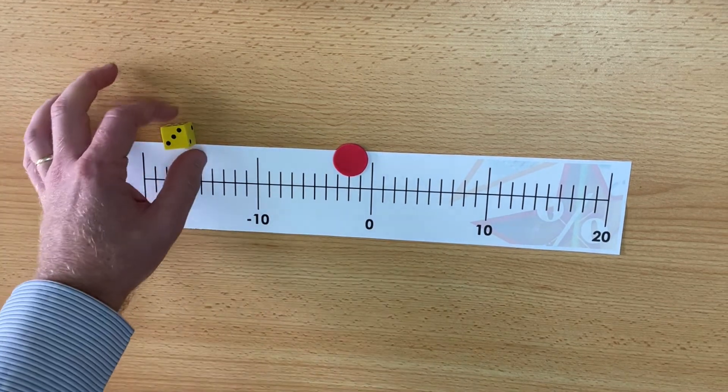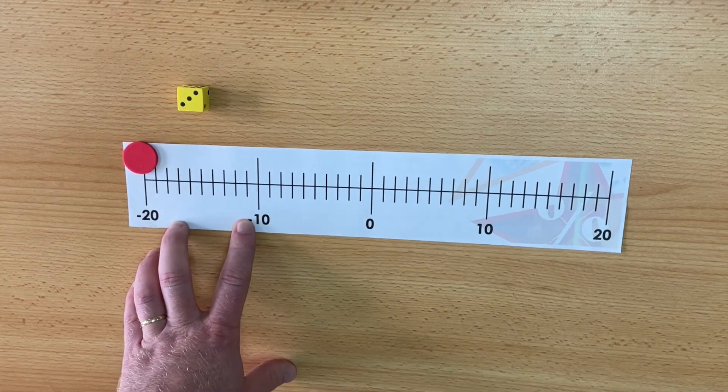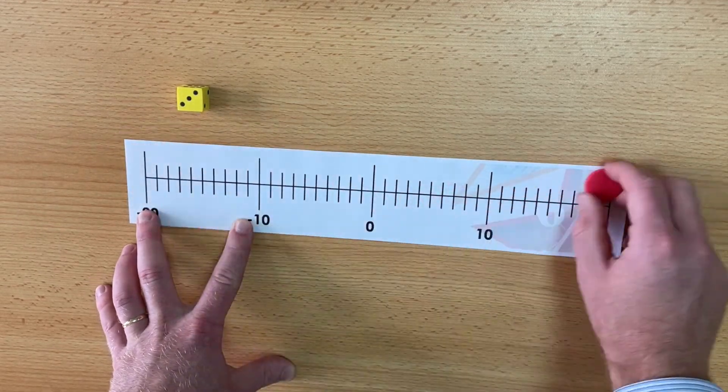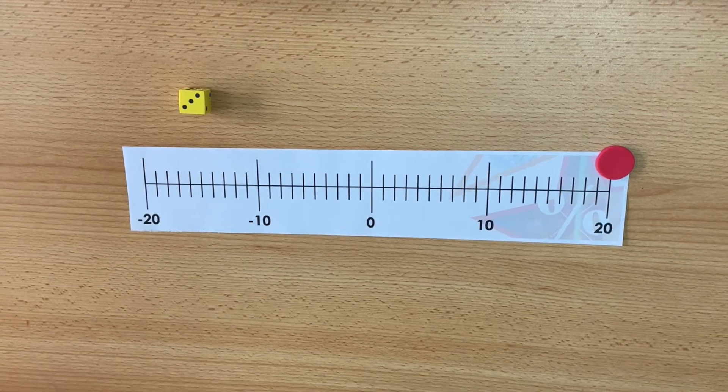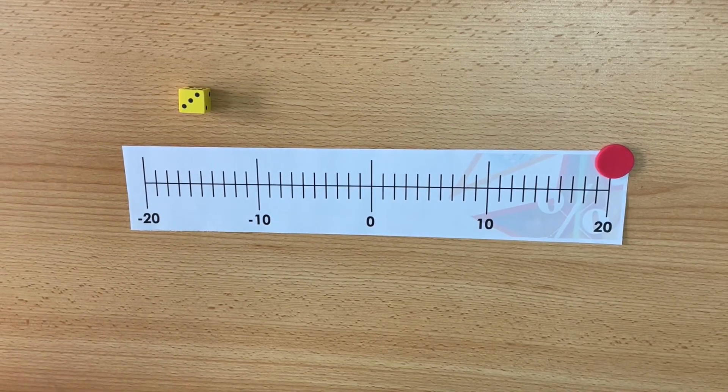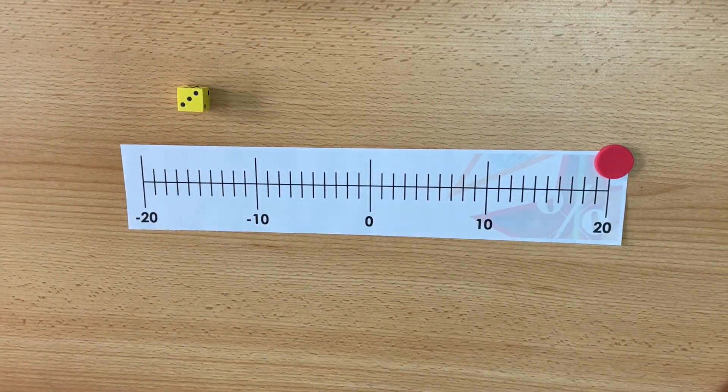The player who wins is the first one to get their counter down to negative 20 or positive 20 and this game we call tug of war because it is a struggle between going from one side to the other.